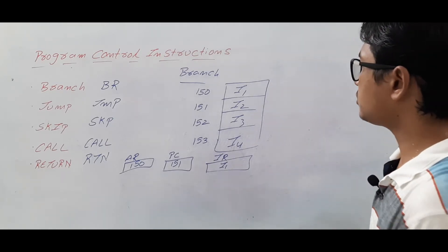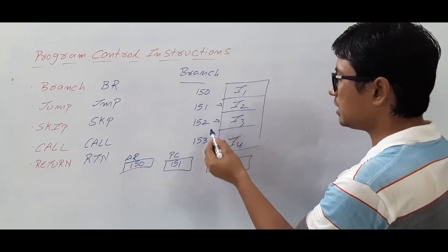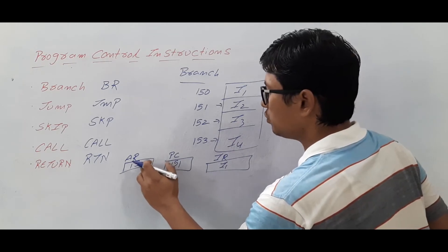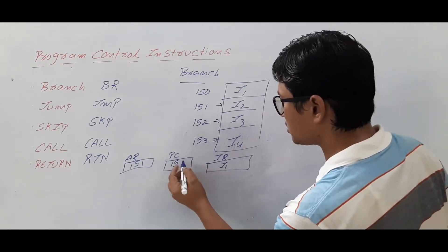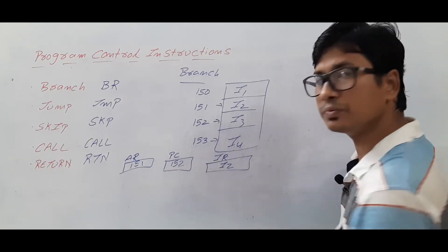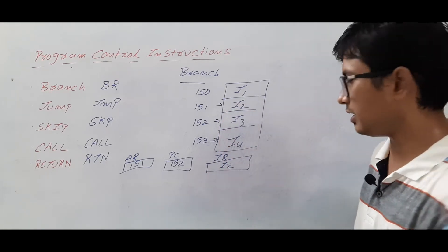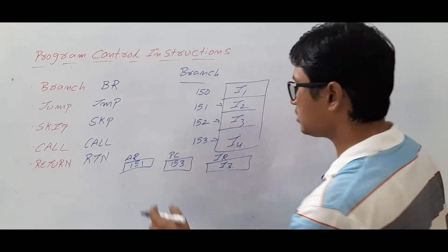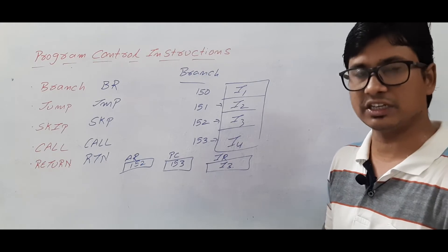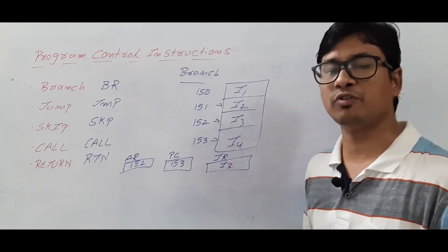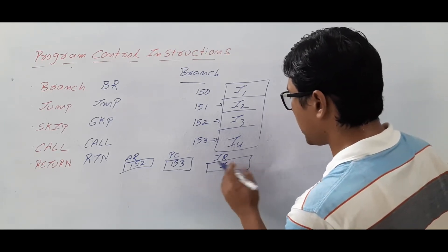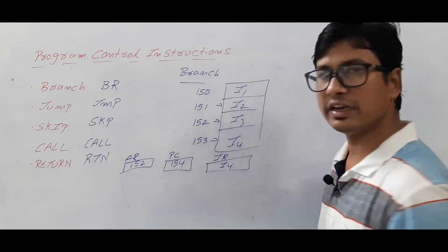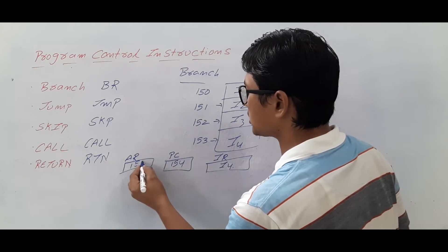Once instruction 1 is finished, we execute instruction 2, then instruction 3, then instruction 4 in sequence. When instruction 2 is executed, the address register consists of 151, the program counter consists of 152, and the instruction register consists of instruction 2. When instruction 3 executes, the instruction register has I3, the program counter has the address of instruction 4, and the address register has 152. When instruction 4 executes, the program counter will have the next address 154 and the address register will have 153.